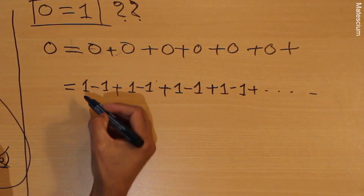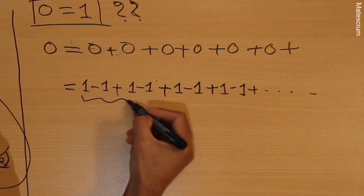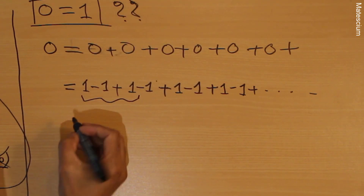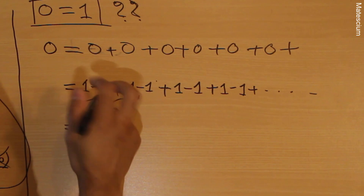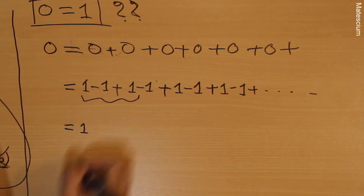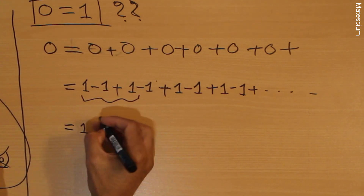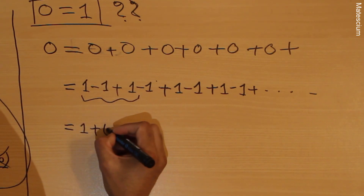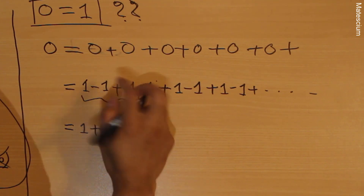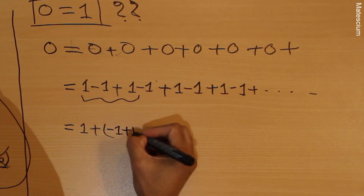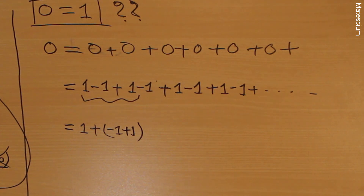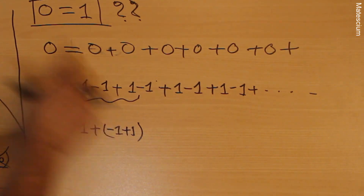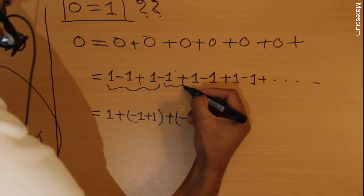Now for the first grouping, consider the first three terms. I rewrite this as: one, and then this minus, rewritten as plus with a minus inside the bracket, giving plus negative one. Then for the second grouping, looking at the next two terms, plus and minus multiply to give minus one.